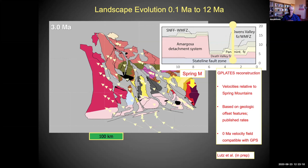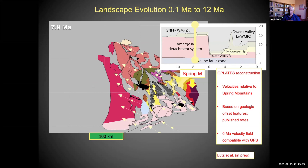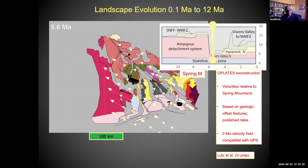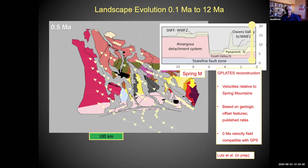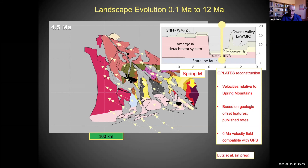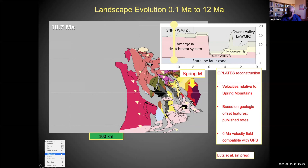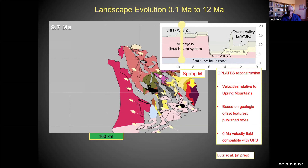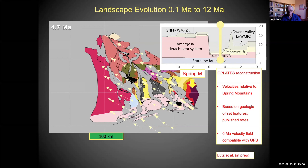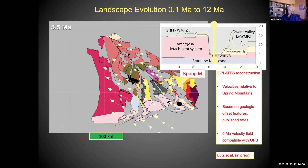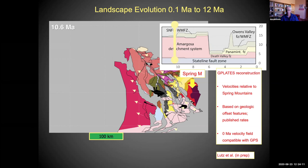This is a landscape evolution model put together by grad student Brandon Lutz. Looking at 12 million years ago — it was close together — it spread apart, and today is moving in this direction. You can see the opening of Owens Valley, Death Valley, and Grant Valley. They've done this through understanding all the faults, dating a lot of the flows, and put this together.